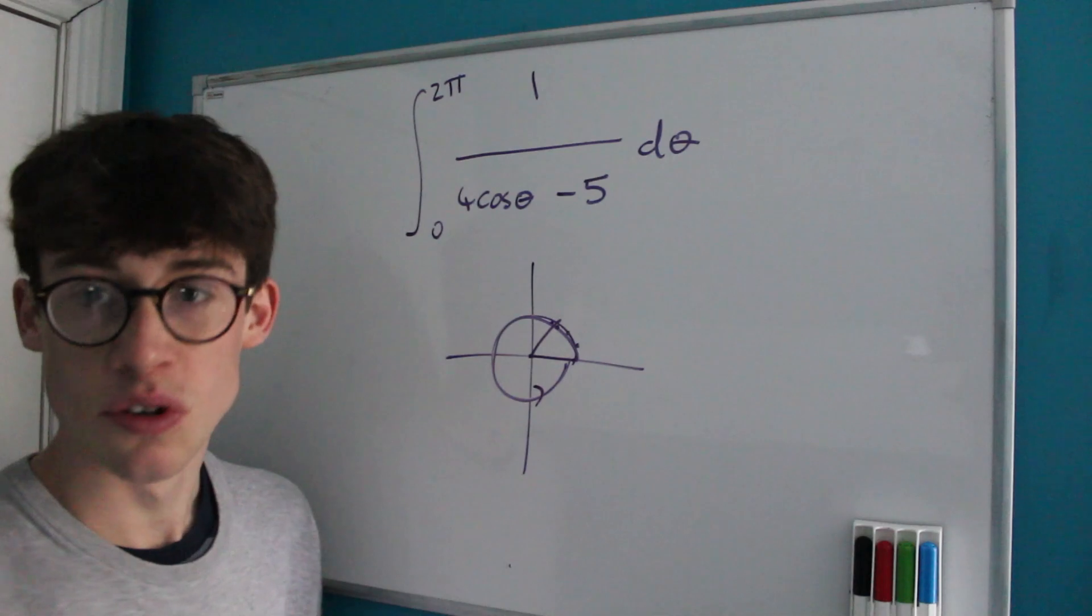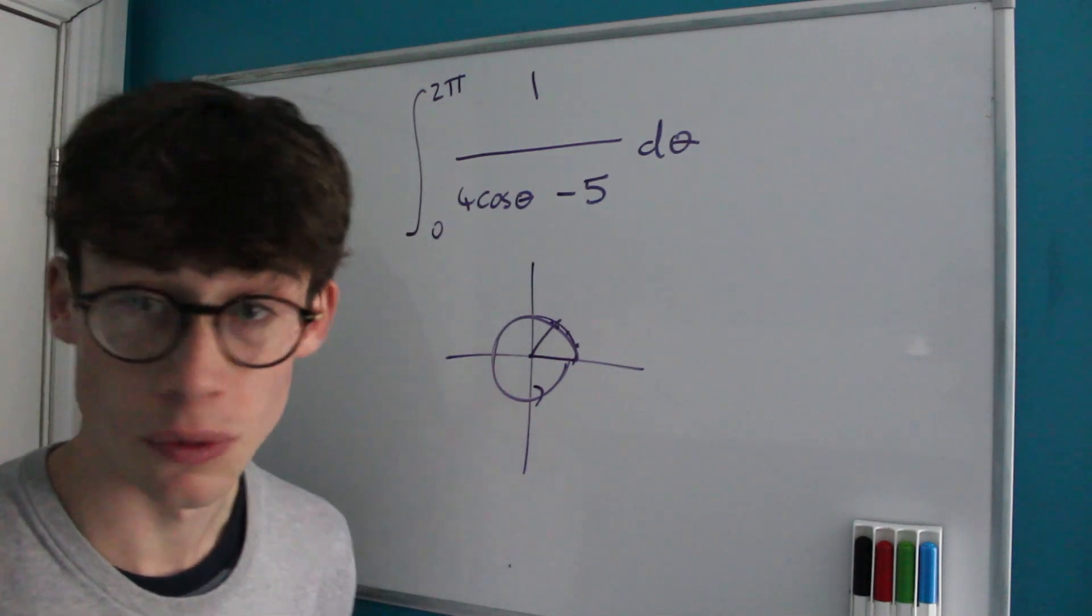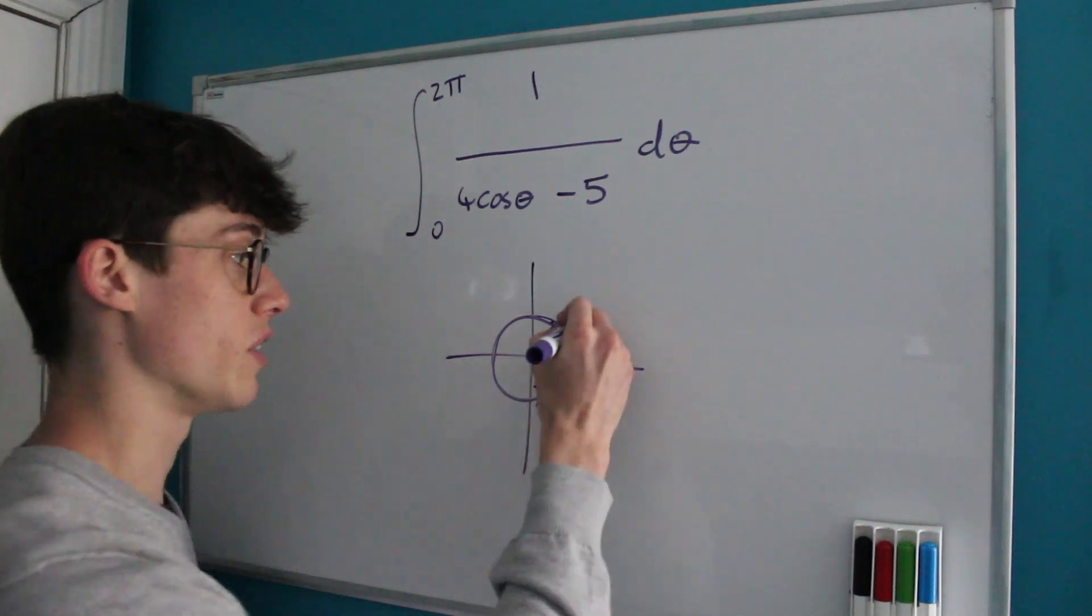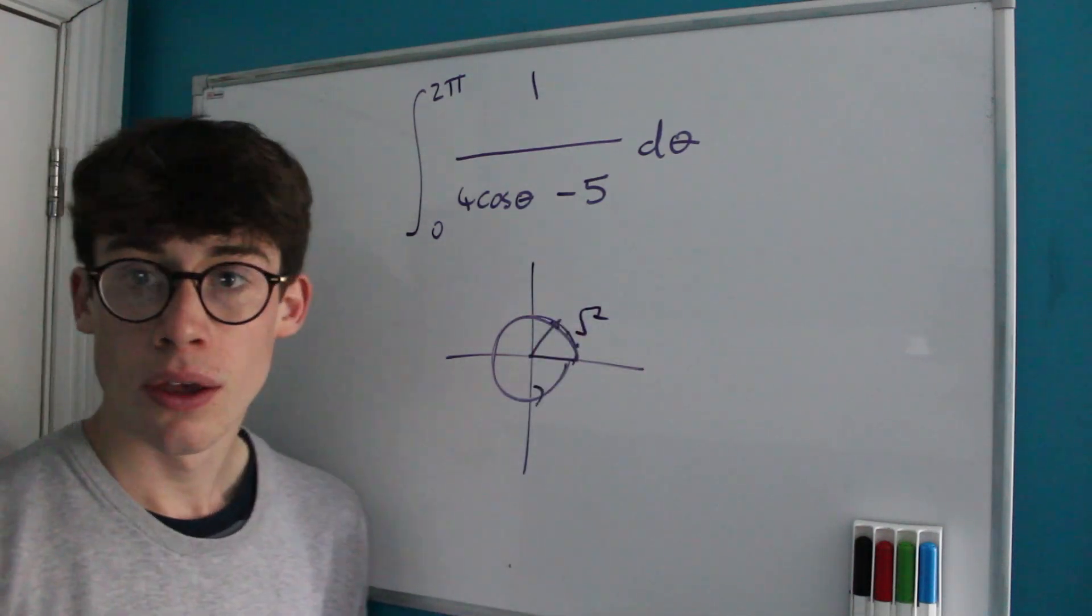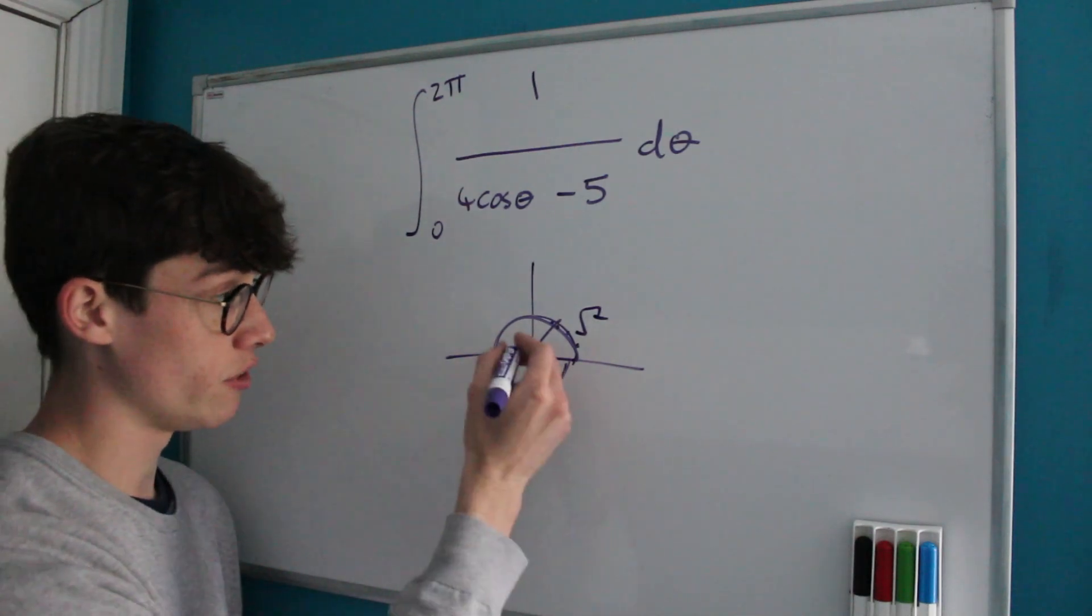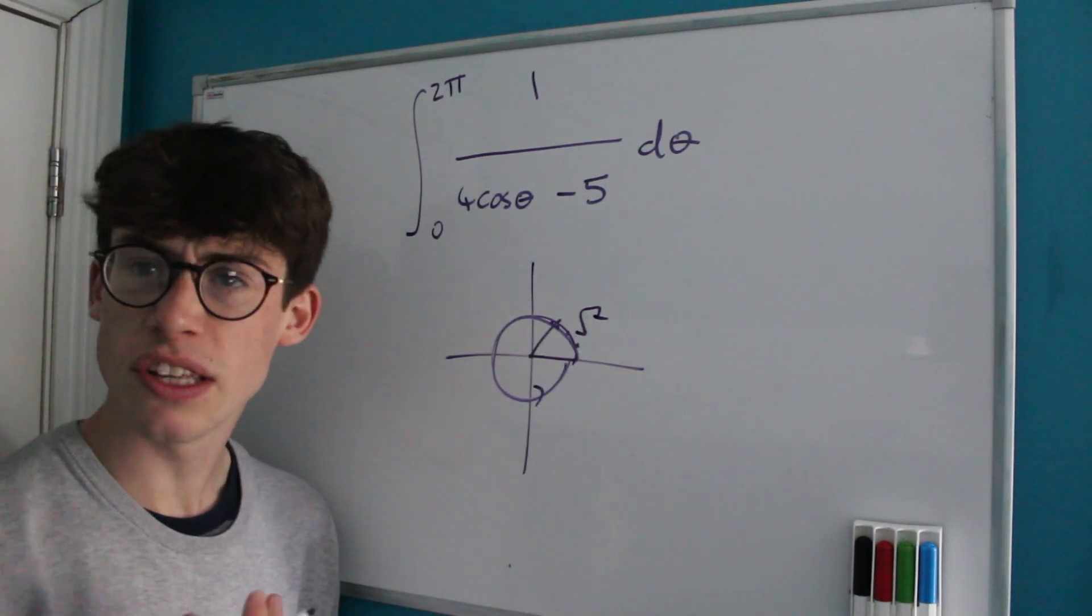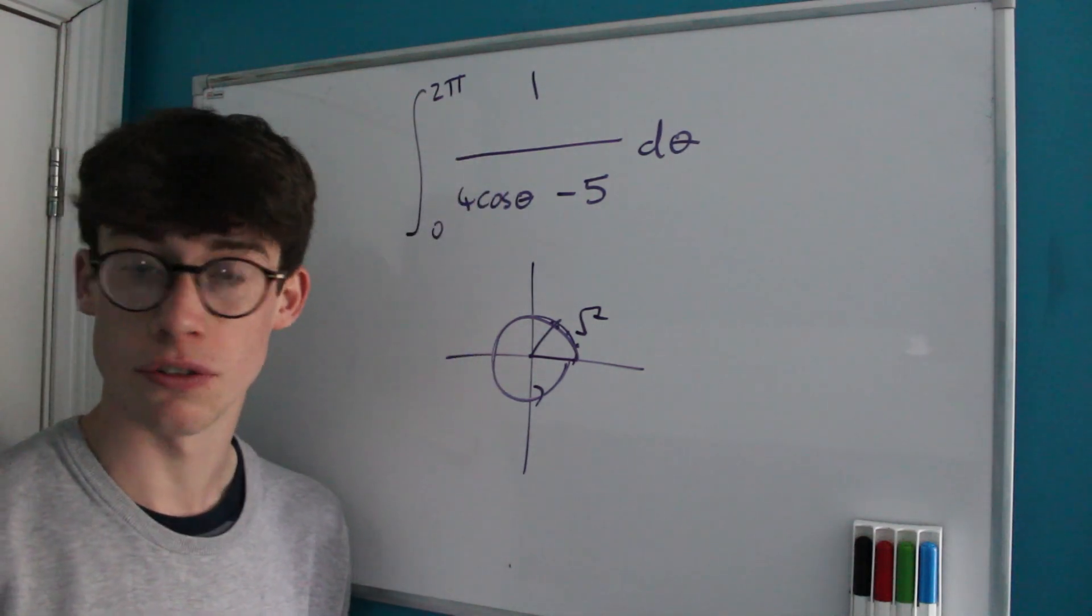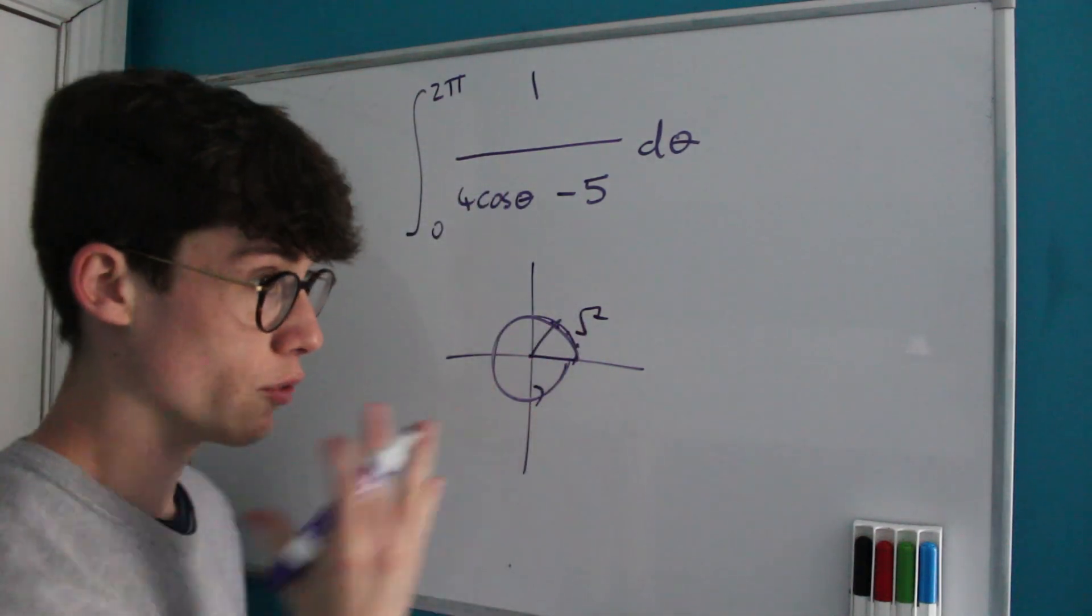And anybody who's come across any contour integrals before will know that when we integrate along a curve, let's call this curve gamma, we parametrize. And in this case we would be parametrizing from 0 to 2π.